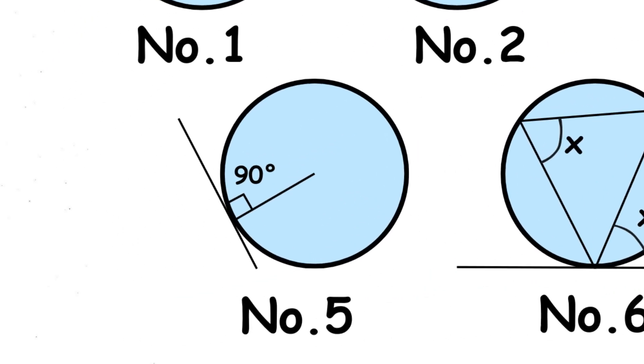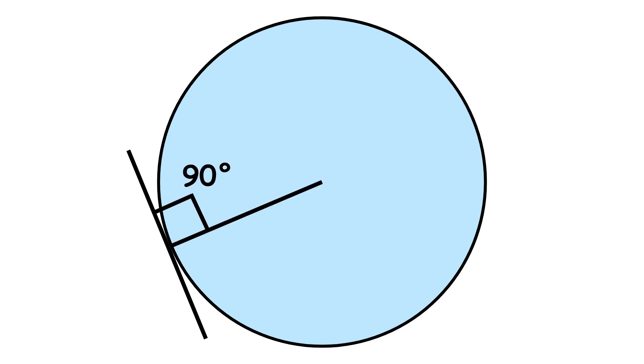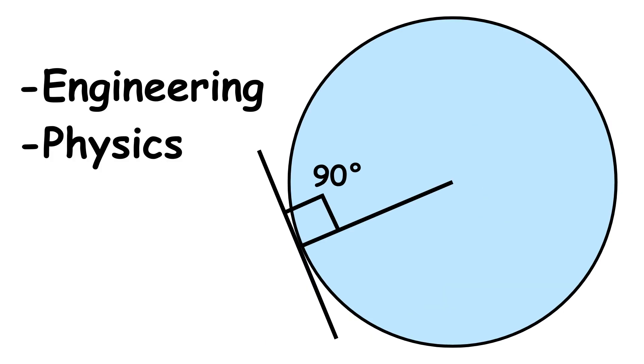The fifth circle theorem is the tangent and radius theorem. If a straight line just touches a circle at one point, it's called a tangent. The radius of the circle at that point is always perpendicular to the tangent. It's a common principle used in engineering and physics.